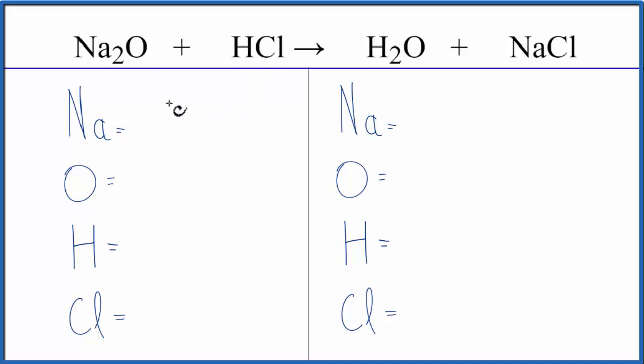Let's count the atoms up on each side of the equation. Na2O1H, we have 1, and Cl, we have 1. On the product side, we have 1 Na, 1 oxygen, 2 hydrogens, and then the 1 chlorine.